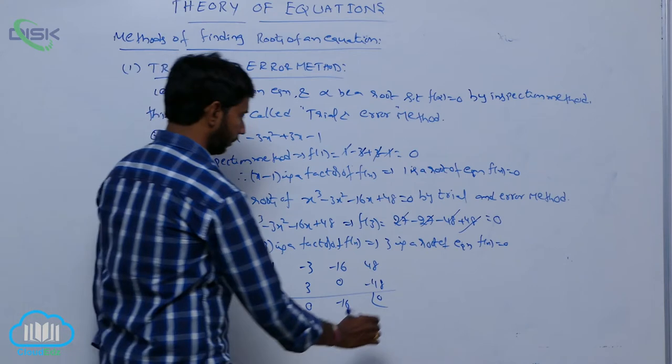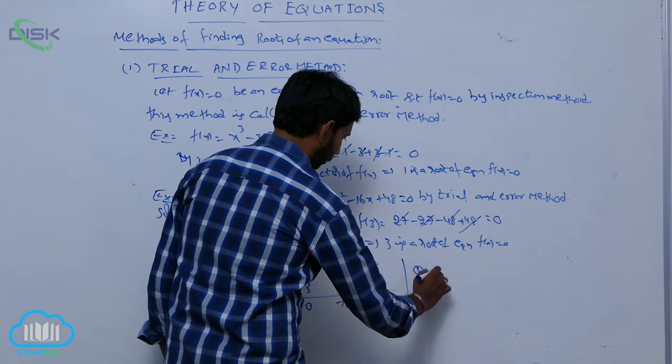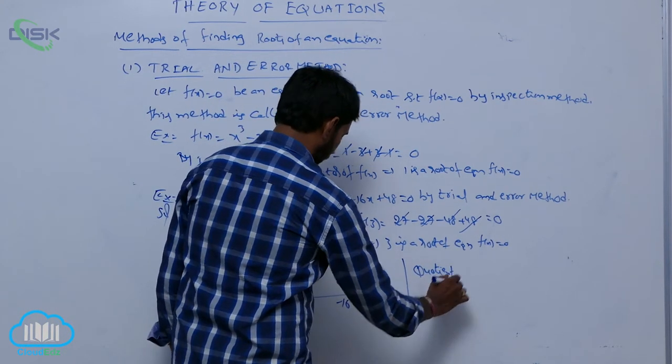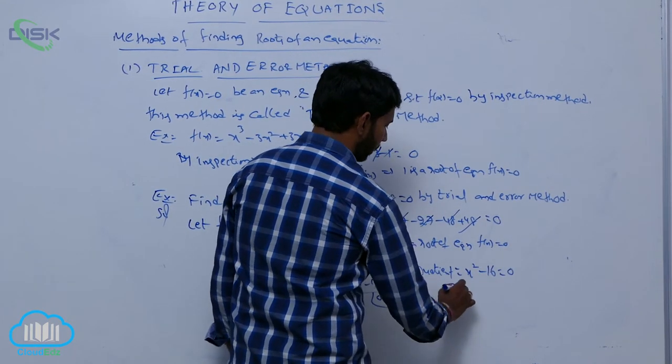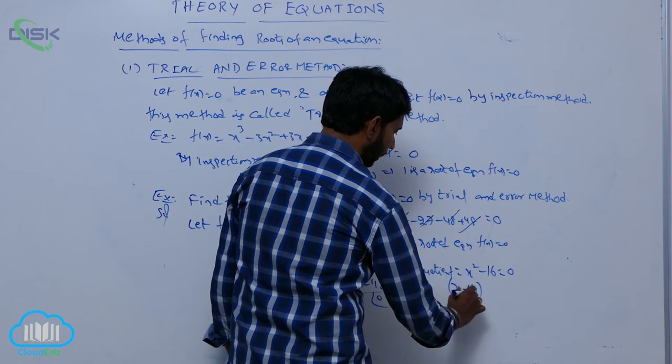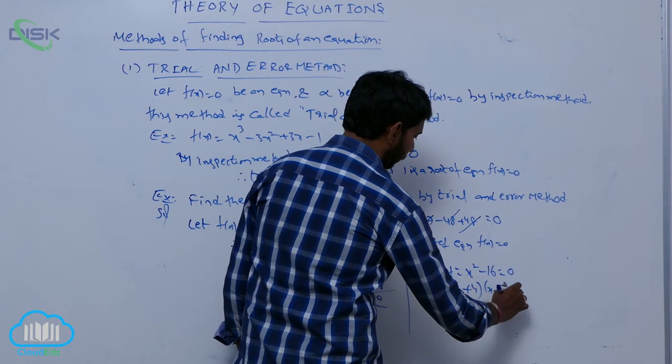Here the quotient is x² - 16. That is (x + 4)(x - 4) = 0.